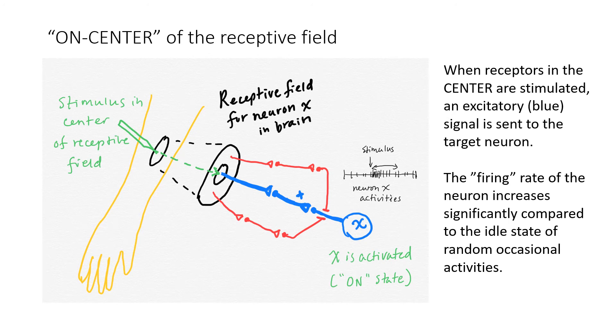If something touches the center of the receptive field, like this imaginary pen, the blue connection is activated and the target neuron is activated. This is an on state, so this type of receptive field is called an on-center receptive field. In the timeline to the right right here,